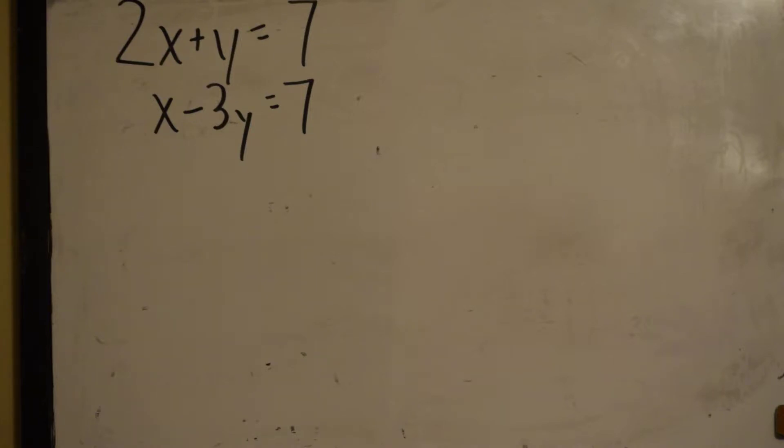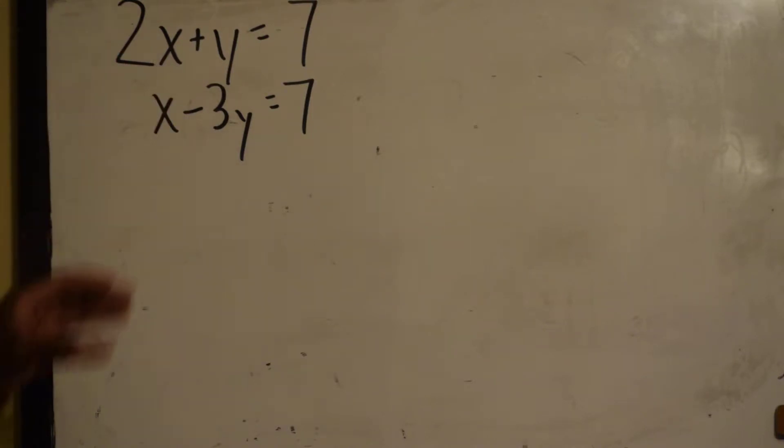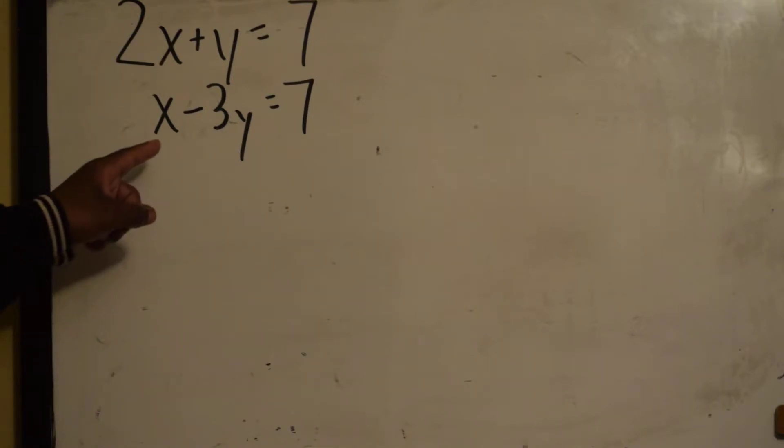Okay, now we will use the inverse of a matrix to solve the system. So before, we used either elimination or substitution to solve for x and y to satisfy the linear system. Now we will use the inverse. So I have 2x plus y is equal to 7, and x minus 3y also equal to 7.